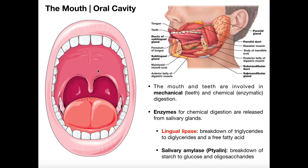These cells also secrete mucus. The mucus mixes with the food and actually lubricates it, which makes it easier to swallow. If you didn't secrete any mucus and had a very dry mouth, it's going to be harder to swallow that food. So the mucus secreted by these intrinsic salivary glands lubricates the food. There's one more important piece: an enzyme called lingual lipase. It suffices to say for now that it catalyzes the breakdown of triglycerides into fatty acids.